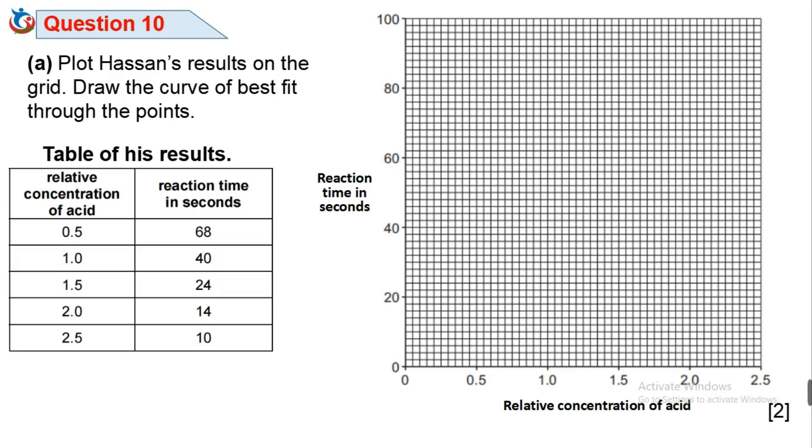We will be provided with a page with grid lines to answer questions like this. Now use the table of results to plot the graph. Mark points of concentration against the corresponding reaction time: 0.5 against 68, 1 against 40, 1.5 against 24, 2.0 against 14, and finally 2.5 against 10.